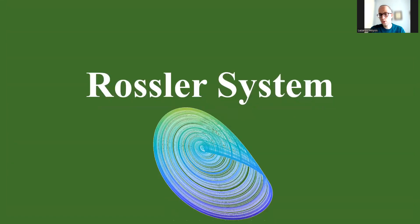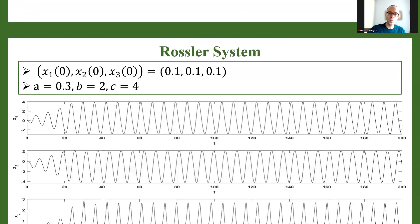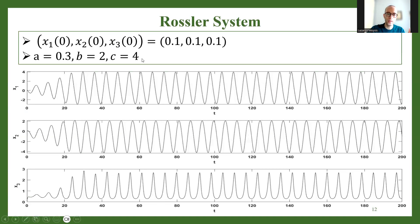And to see a different example, just so that you can understand that the shape of the attractor will be very different for different systems — just as an example, we're going to take the Rössler system, another very well-known chaotic system, again three-dimensional. Again, it has three parameters A, B, and C, and a very rich behavior. So let's obtain the numerical solution. I set these initial conditions and these parameter values. And for this set of parameters, the system is periodic.